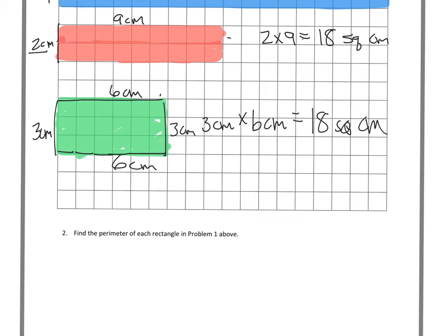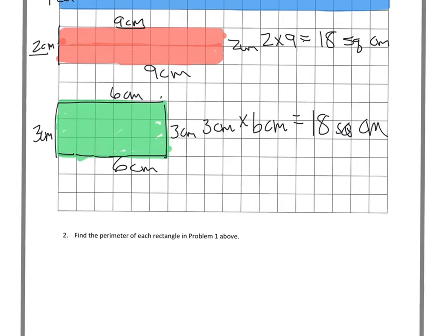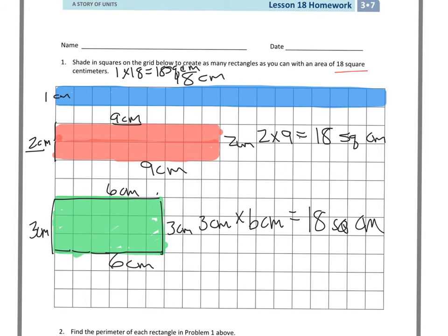If this is 2, this is 2. If this is 9, this one's 9. And the same thing up above. If this is 1, this is 1. And if this is 18, this one's 18. And then I can go ahead and add those up. And I'm going to leave that to you. So let's go to page 2.